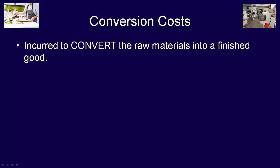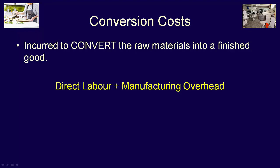Conversion costs are the costs which are incurred to convert the raw material into a finished product. Conversion costs are therefore equal to direct labour plus manufacturing overhead. This grouping makes sense because it's the labour that takes the raw material and makes the finished product, using the factory, the equipment, the electricity — all of which make up manufacturing overhead.